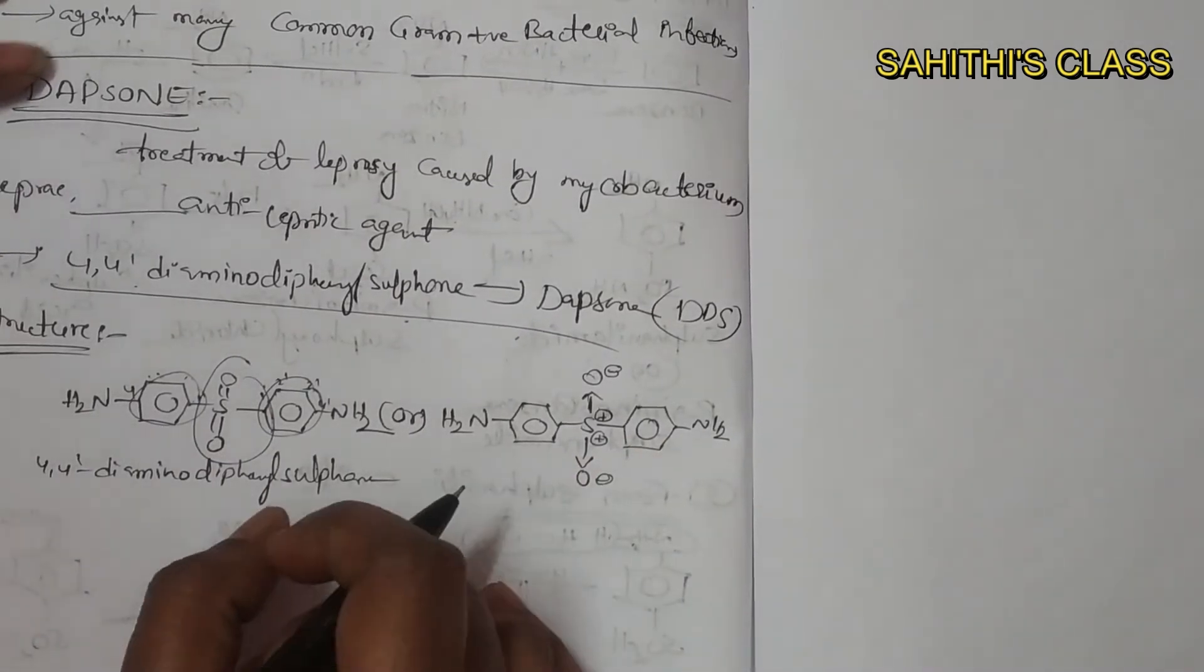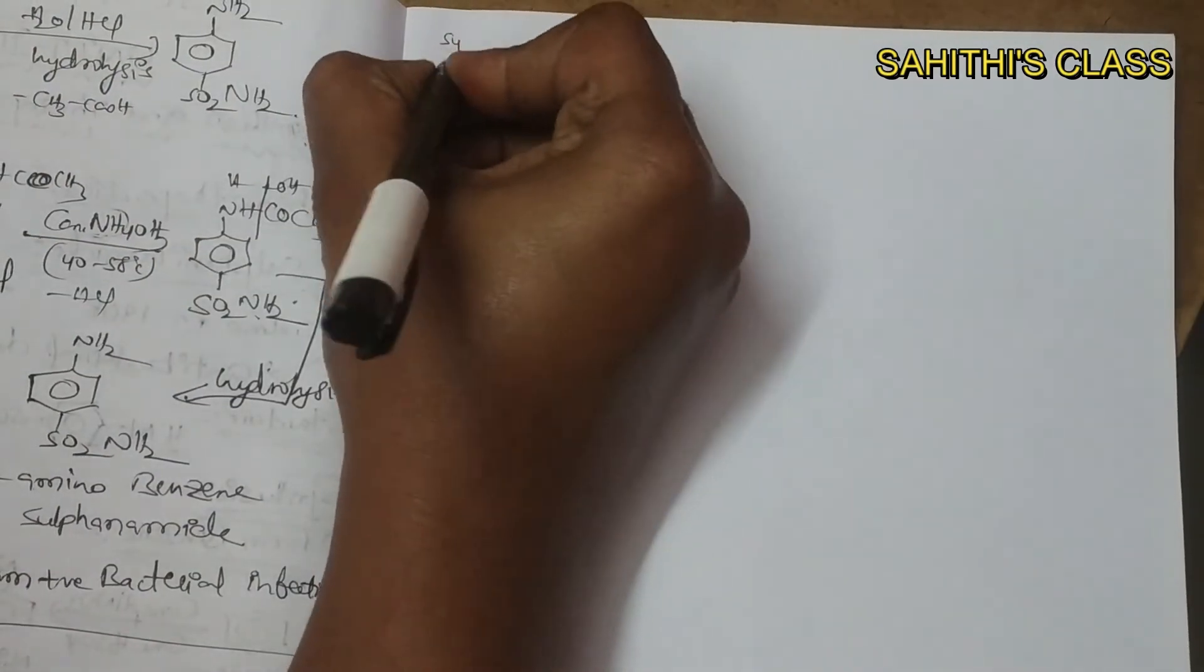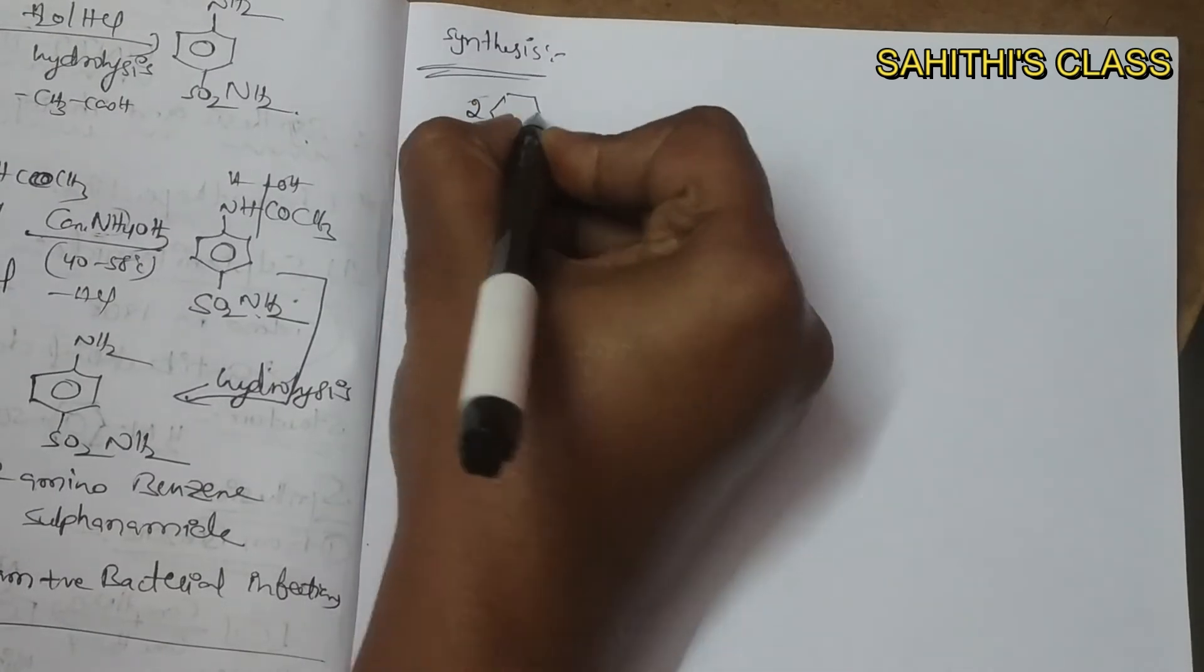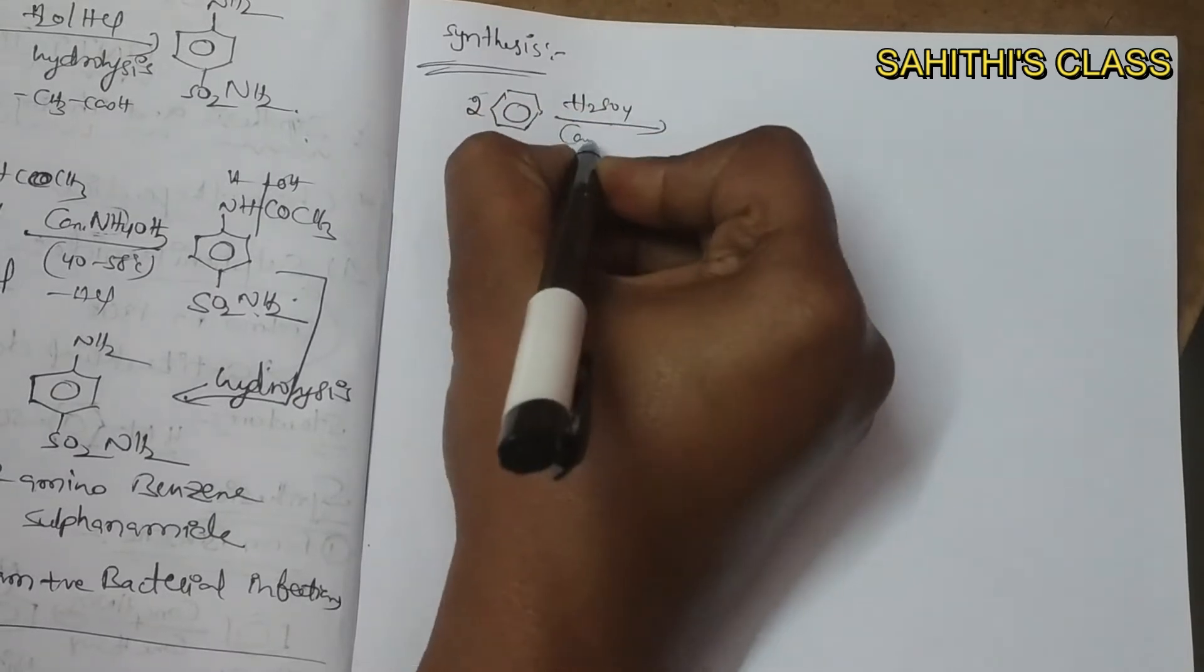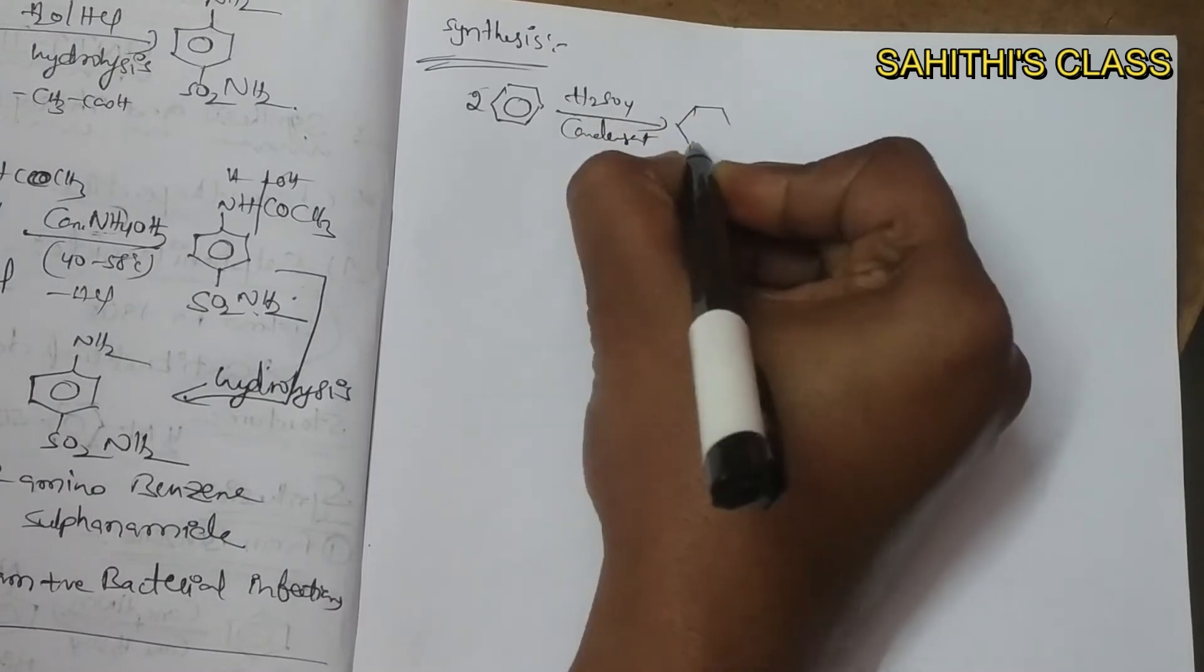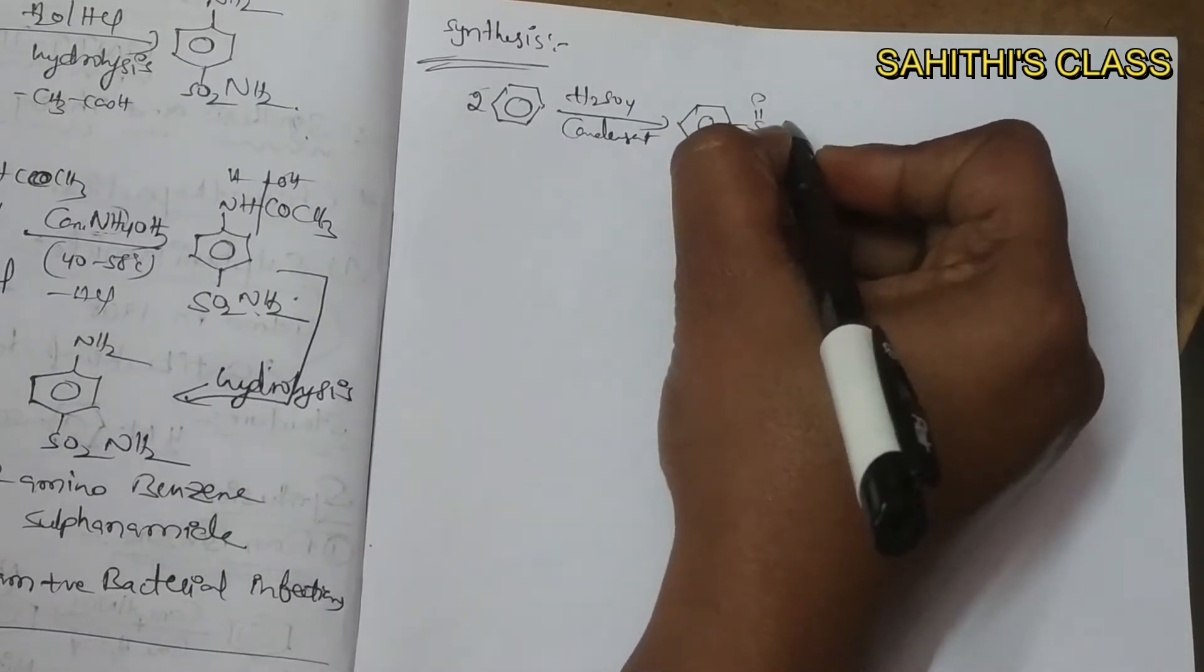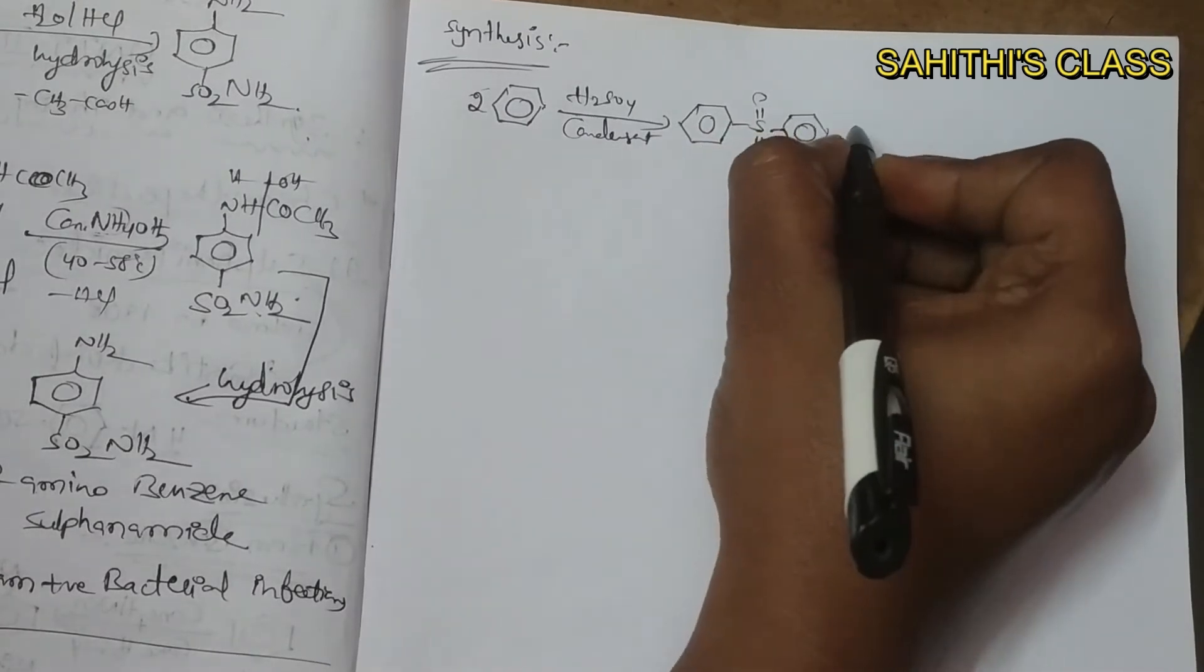So synthesis of dapsone. For the synthesis of dapsone, first of all we can take benzene. Here we can take two moles of benzene. It undergoes sulfonation. So sulfonation of benzene forms diphenyl sulfide.